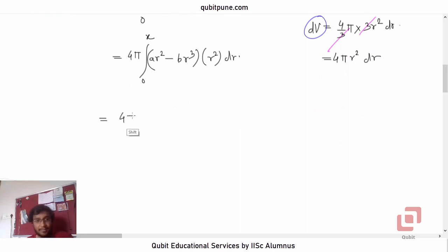4π as it is. Into now pay attention: this is ar² into r², so that will be ar⁴. Integrate it so that will be r⁵/5. Lower limit is zero so there is no need to write it, so it will be x⁵/5.